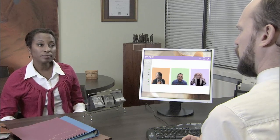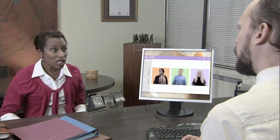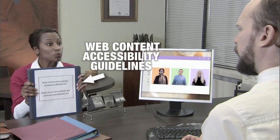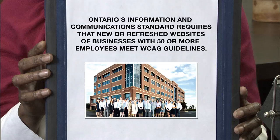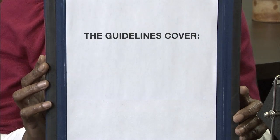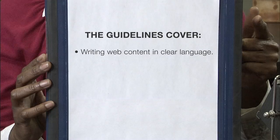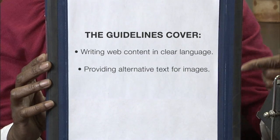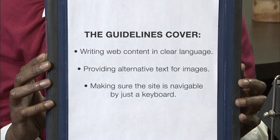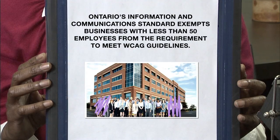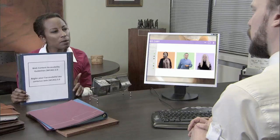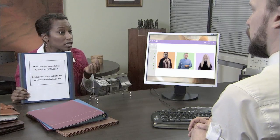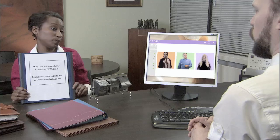Sonia tells Harold that there are international standards for website accessibility called the Web Content Accessibility Guidelines (WCAG). Ontario's information and communication standard requires that new or refreshed websites of businesses with 50 or more employees meet WCAG guidelines. The guidelines cover writing web content in clear language, providing alternative text for images, and making sure the site is navigable by just a keyboard. The standard exempts businesses with less than 50 employees from the requirement, but accessible websites have better search results, can raise your site ranking, and it's a good thing to do.